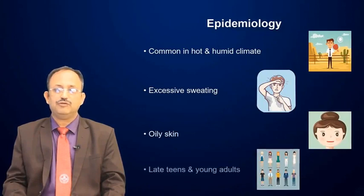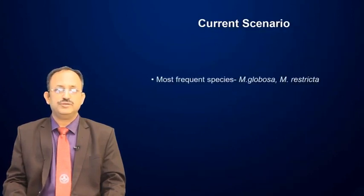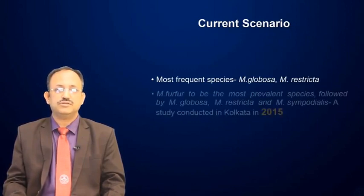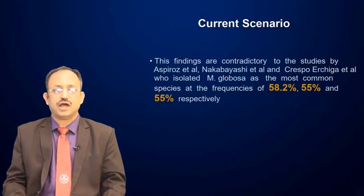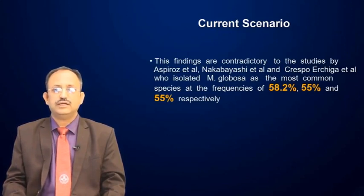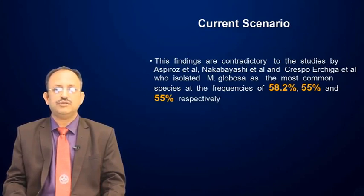Those who have oily skin are also affected, and considering age, it is basically late teens and young adults who are usually affected. The frequent species worldwide are Malassezia globosa and Malassezia restricta. But in India, it is Malassezia furfur that is the most prevalent species, followed by Malassezia globosa, then Malassezia restricta and Malassezia sympodialis. Studies from other parts of the world have shown that Malassezia globosa is the commonest species, occurring at frequencies of nearly 50 to 60 percent.